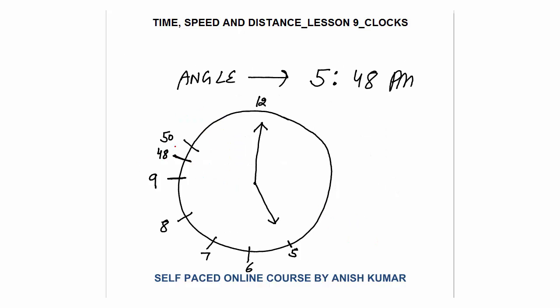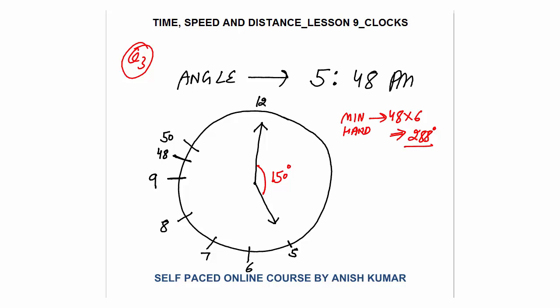Question 3: What is the angle between the hands of the clock at 5:48 p.m.? Try to pause and solve this yourself. At 5 o'clock the gap between the hands is 25 minutes, so the angle is 25 × 6 = 150 degrees. At 5:48 p.m. both hands move 48 minutes. The minute hand covers 48 × 6 = 288 degrees.